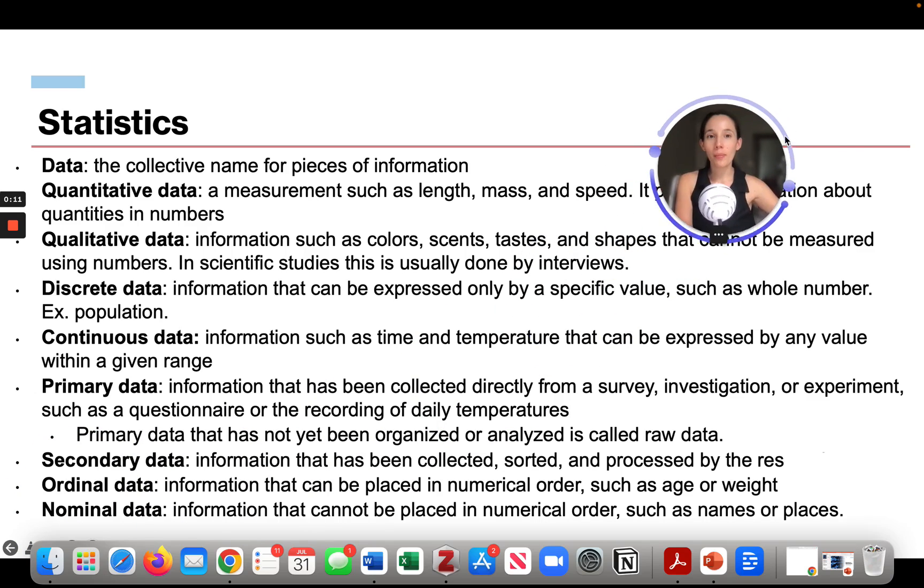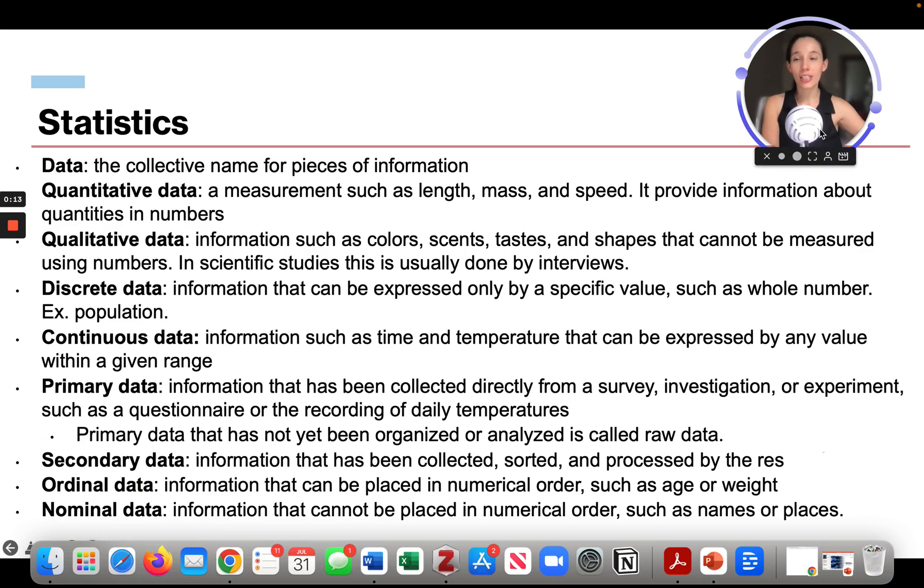All right. So some wording to know for statistics. You're going to have data - this is a collective name for a piece of information. You have quantitative data, which is measurements such as length, mass, and speed. It provides information about quantities and numbers. So that's a good way to remember: quantitative is quantities.